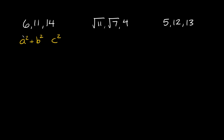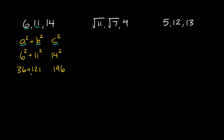Let's fill in our numbers for a, b, and c. Remember, a and b are the lengths of the two shorter sides, so that would be 6 and 11. So we have 6 squared plus 11 squared, and c is the biggest side — the hypotenuse — so it's 14 squared. That gives us 36 plus 121 on this side, and 14 squared is 196. So 36 plus 121 equals 157, compared to 196. Since c squared is bigger than a squared plus b squared, these three triangle lengths form an obtuse triangle.